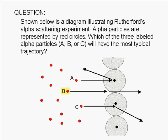Only a very, very small fraction of trajectories, similar to choices A and C, were observed in Rutherford's experiment. This suggested that the distances between nuclei are very, very large compared to the size of the nuclei.